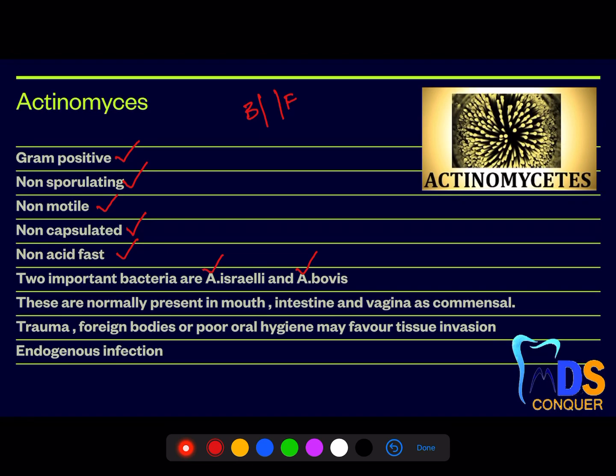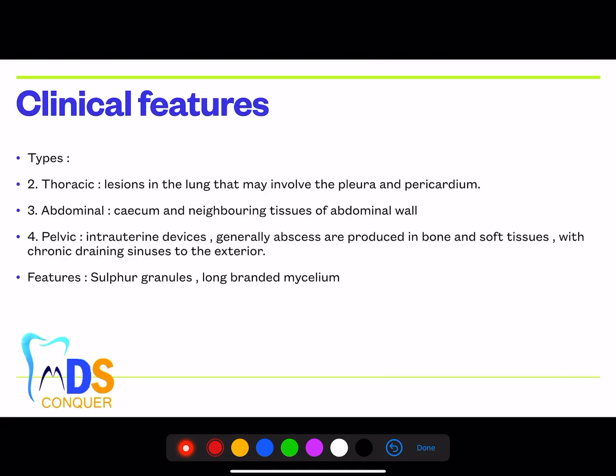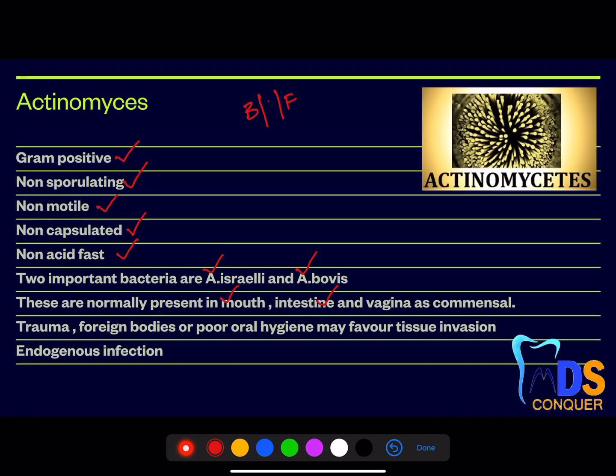The two important bacteria here — most of your questions will revolve around these two. They are normally present in the mouth, intestine, and vagina as commensals. The mode of entry of these organisms into the body is by breaking the mucosal barriers in all these areas — the mouth, intestine, and vagina.